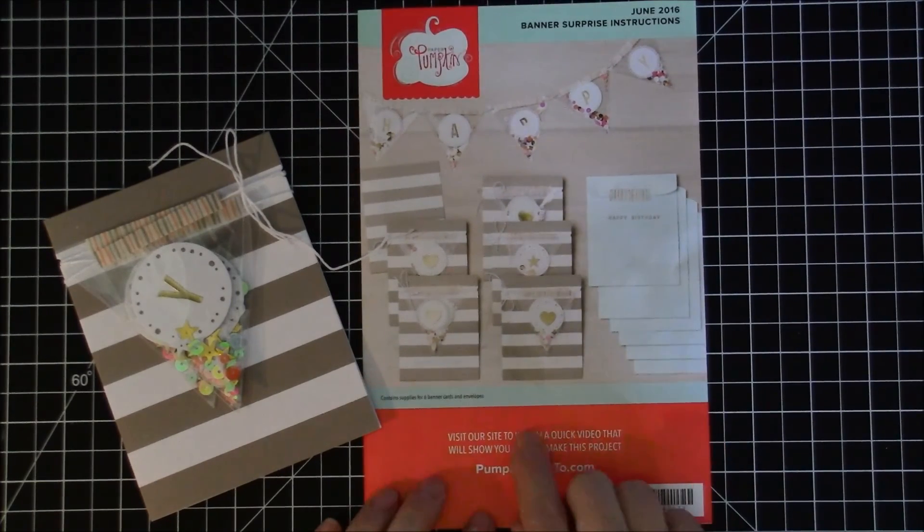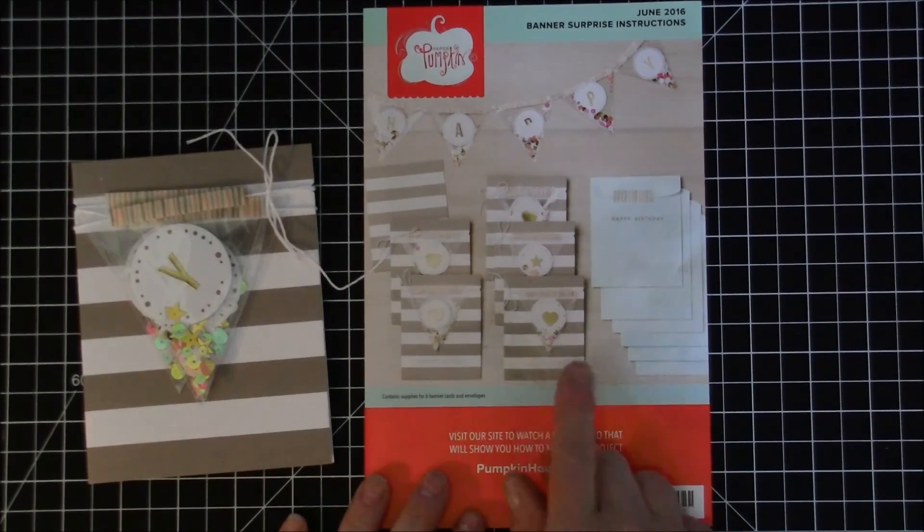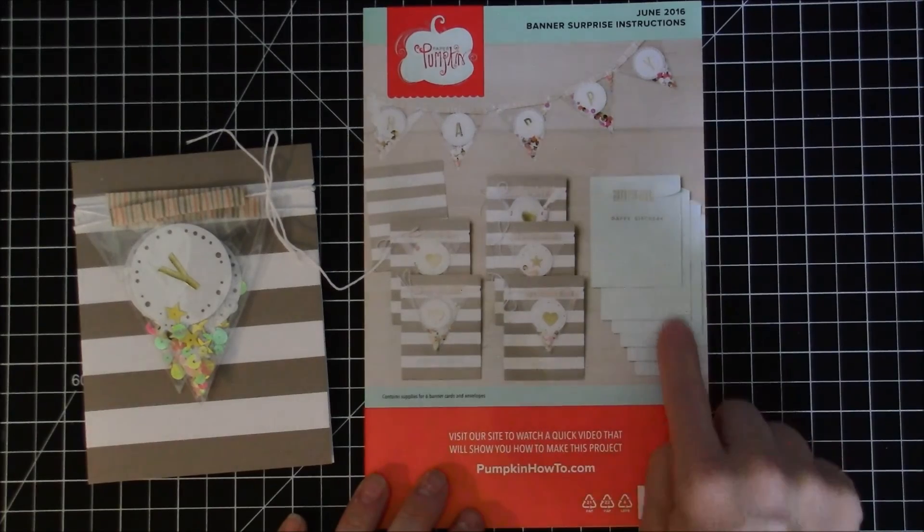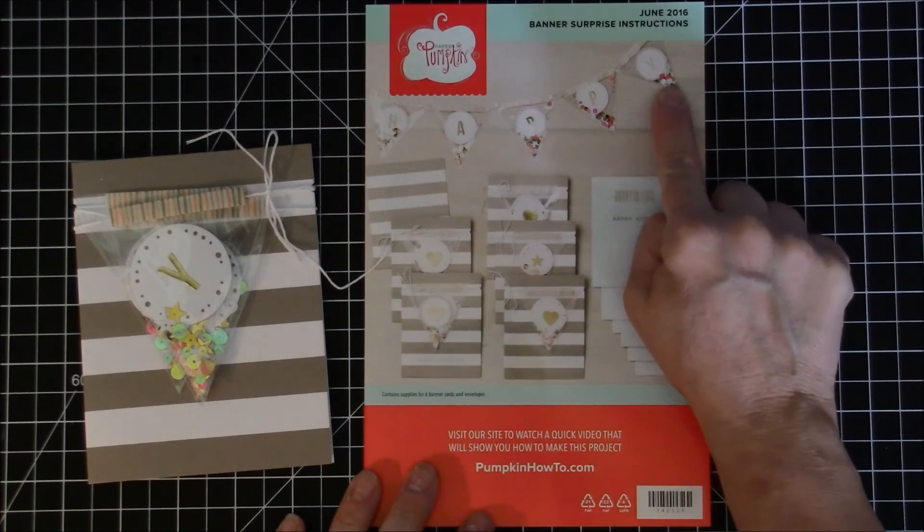This is the picture of the June kit and it has some great striped card bases with matching envelopes. For this month you'll be making cute little banners that attach onto the card bases that you can use for any kind of occasion.